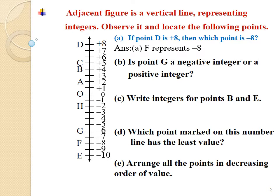Sub-question b: Is point G a negative integer or a positive integer? By observing the number line, it is clear that point G is a negative integer. Thus, the answer is point G is a negative integer.